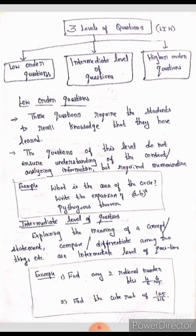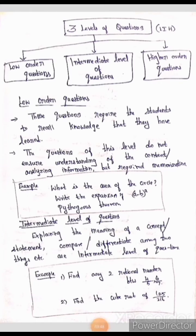At the intermediate level, questions involve explaining the concept, meaning, statement, comparison, and differentiation among two things. For example: find any two rational numbers — such as 4/5 and 6/7. Those are two rational numbers, which is an intermediate level question. Another example: find the cube root of 125/216 — the cube root of 125 and the cube root of 216. That is also an intermediate level question.